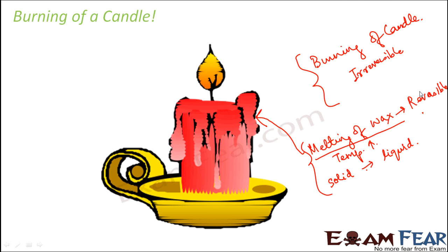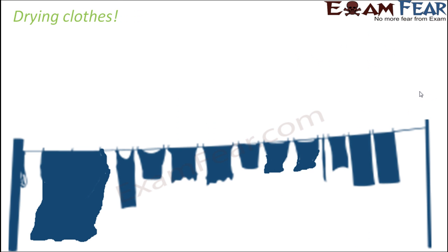Drying clothes: when you wash clothes, they are wet and contain a lot of water. When you put them in the sun, they get dried up. The clothes which were wet become dry — this is a reversible change, because when they are exposed to very low temperature again, they will become wet.